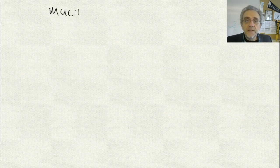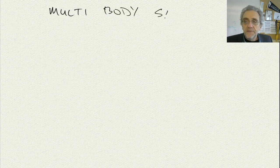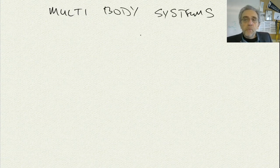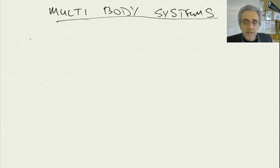Hello again. We're back. So today we're going to learn about multi-body systems. Now, in order to do this, we're going to start off with Atwood's machine. Atwood's machine is simply a pulley.